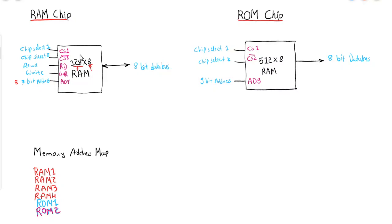Read will be used to read data from RAM, meaning to transfer data from RAM to the outside world. Write will be used to transfer data from the outside world into RAM. So those are the read and write operations.